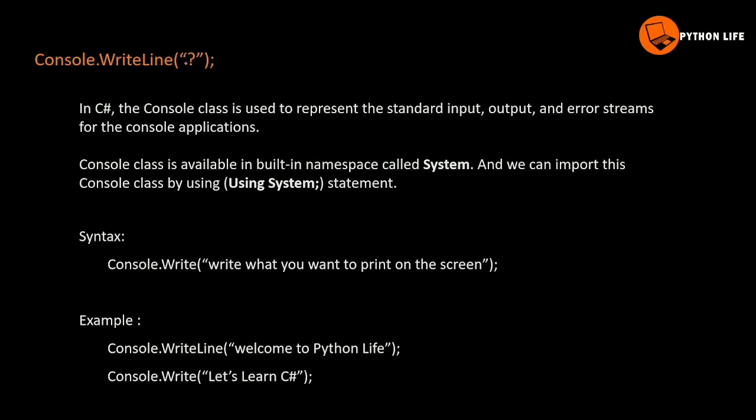The last one is syntax. In C#, the console class is used to represent the standard input, output, and error streams for console applications. The console application is called CMD — it is only text. So when we have standard input and output, we can add the console class. This is the predefined system namespace. The console class is available in the built-in namespace called system. We can import this console class by using the 'using system' statement. Using system, we can use the built-in namespace, classes, and functionality in the present program.